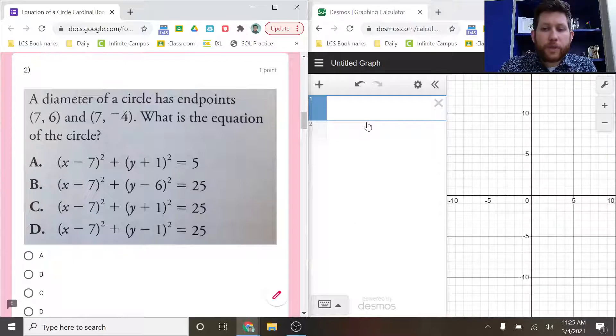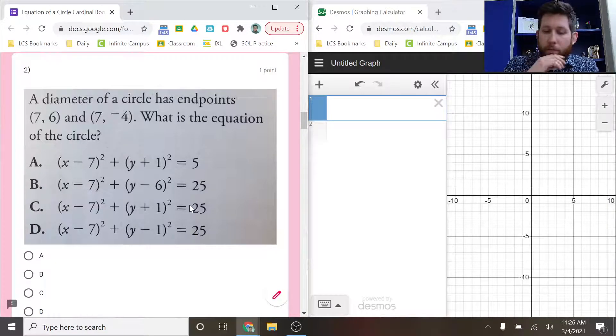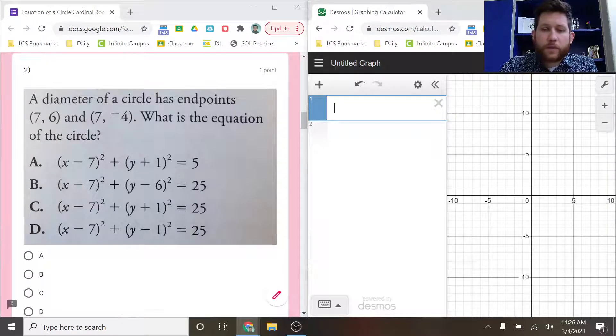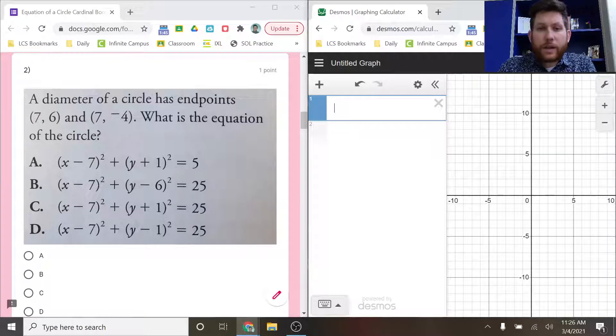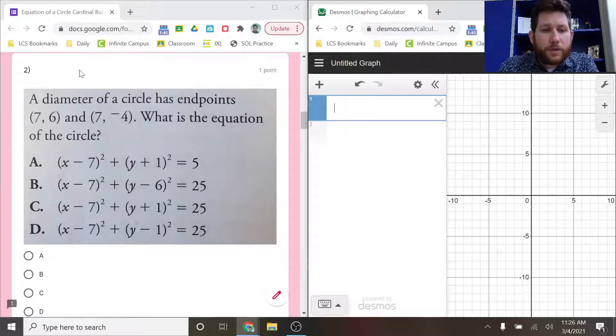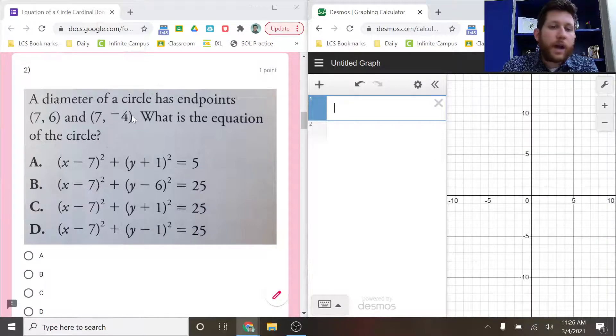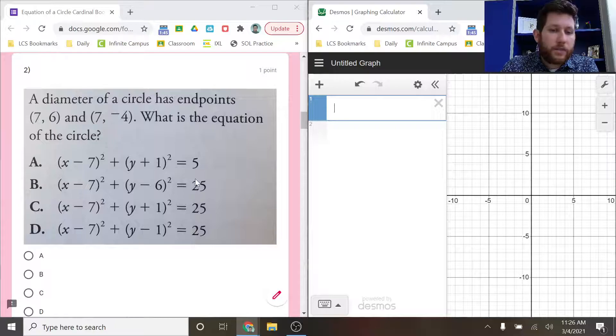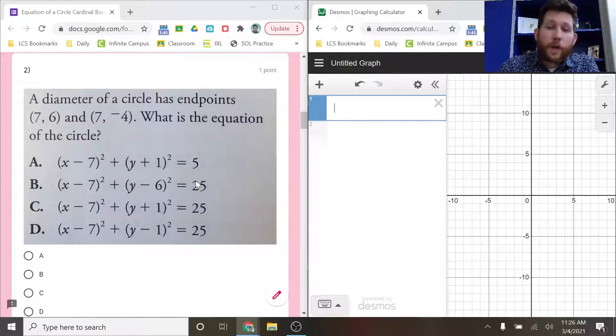If we were to solve this using algebra, it would actually be pretty complicated. It would be kind of difficult to do. So instead of using algebra, what I'm going to do is show you how to use Desmos, which is available on the Virginia SOL. Let me just show you how to use it and show you how to help you solve for the right answer or to just check if the answer that you get is correct. If I was to solve this with algebra, a diameter of a circle has endpoints (7,6) and (7,-4). What is the equation of the circle? If I was doing algebra, what I would do is plug (7,6) into each of these, check and see if it's the right answer. I'd plug (7,-4) into each of these, check and see if it's the right answer. That would be one way I'd do it. There's other ways to solve it. That way it would be pretty straightforward. But let me show you what I can do in Desmos.